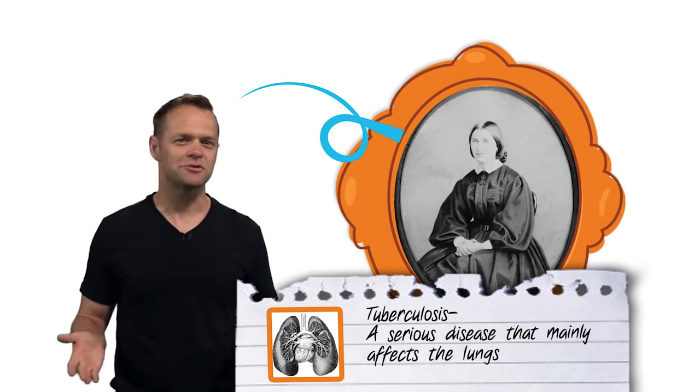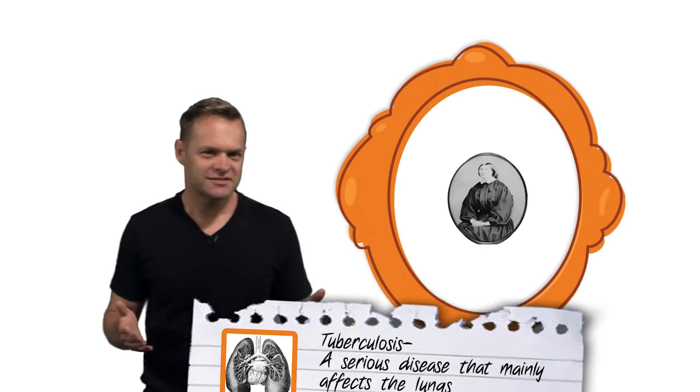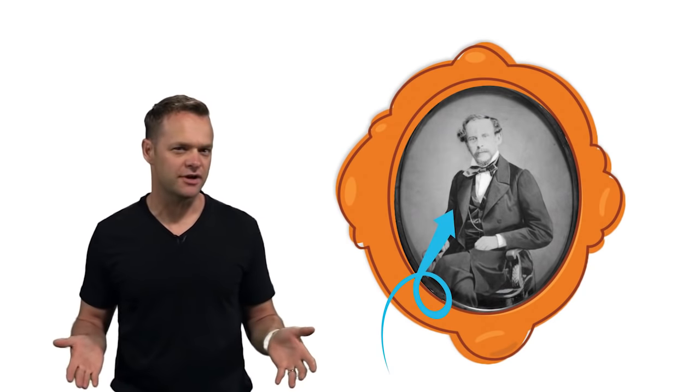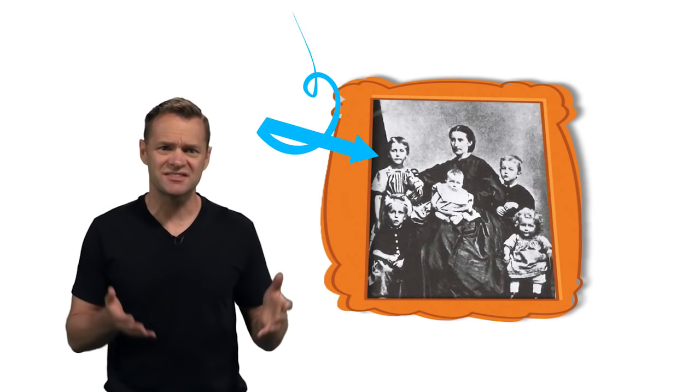To begin, Munch lost his mom to tuberculosis when he was only five years old. His dad, who happened to be a medical doctor in the army, was left to raise five kids on his own, which was definitely not easy. Then just a few short years after, Munch lost his favorite sister Joanne to the same dreadful disease. Terrible.